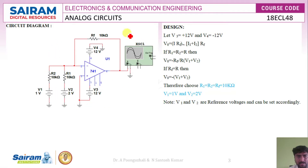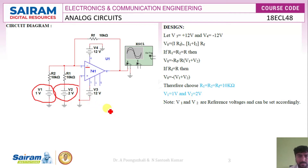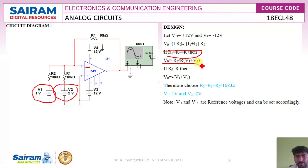This figure shows the adder circuit. We have V1 and V2 as inputs applied to the inverting terminal of the op-amp, so this is an inverting summer. We know the equation for an inverting summer: V0 equals minus RF by R, multiplied by V1 plus V2. When R1 and R2 are both equal to R, we get V0 equals minus RF by R, multiplied by V1 plus V2.